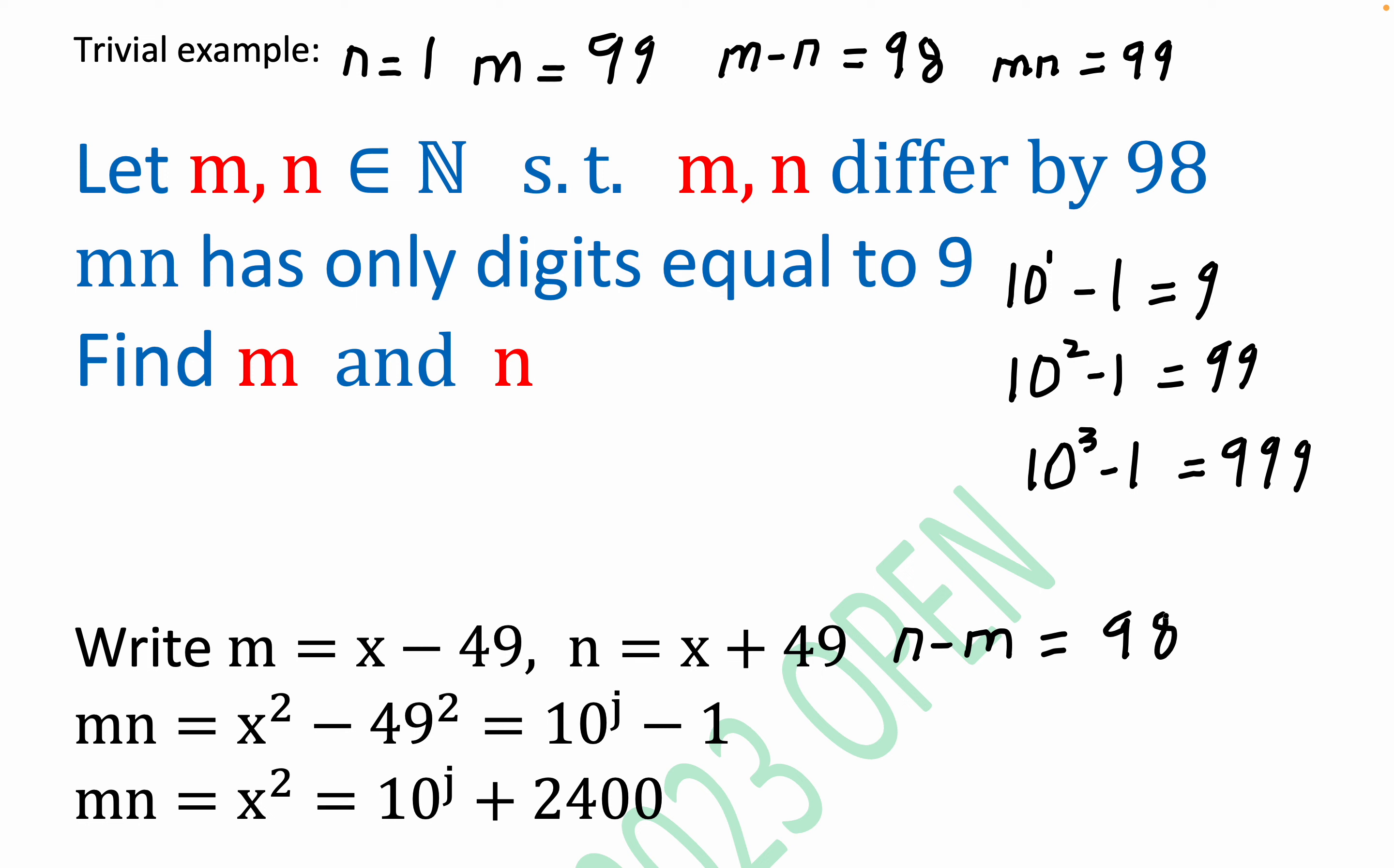m minus n is equal to 98 for sure. And again, we're doing a symmetry thing. We're going to get a difference of two squares going on. And the problem works out very nicely.